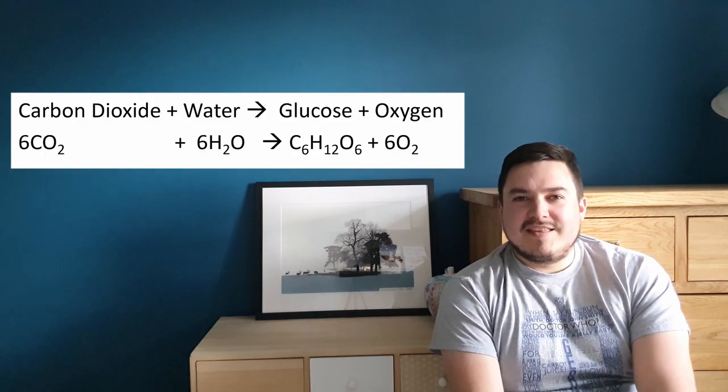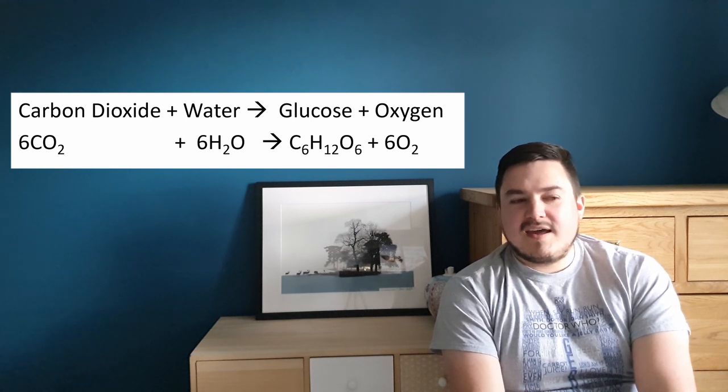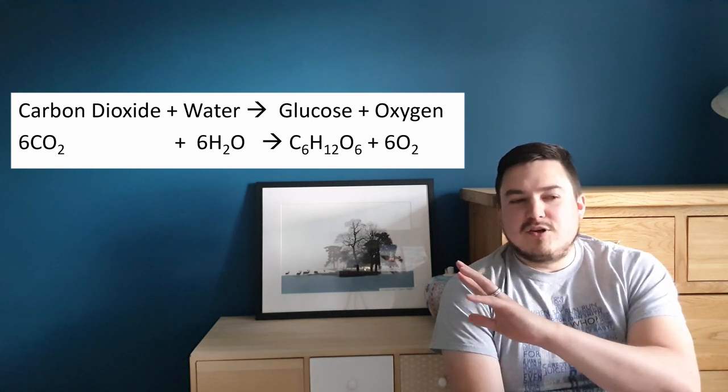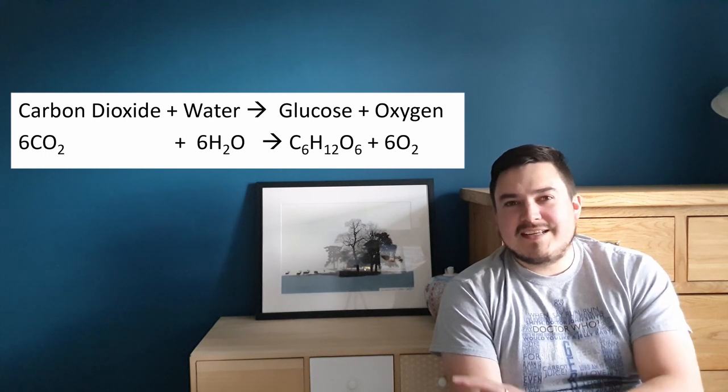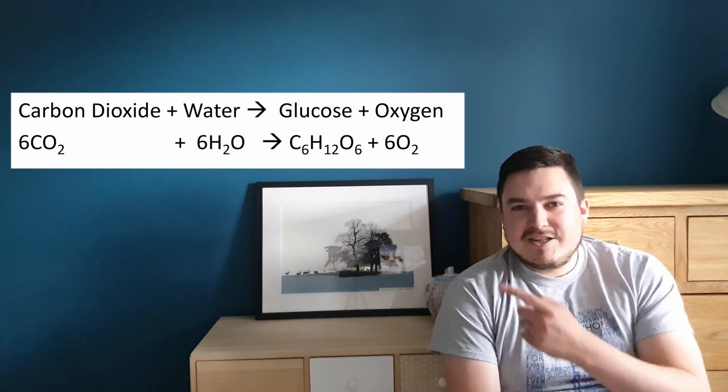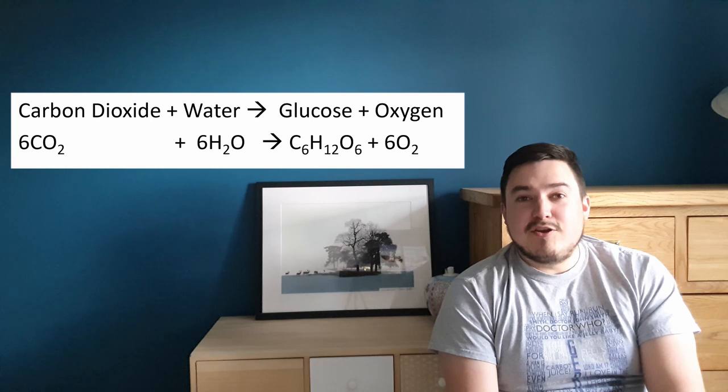To start with, the first thing you need to know about is photosynthesis - the most important thing that plants do to make their own food using sunlight. We use this word equation and this symbol equation to help us with that. It's carbon dioxide plus water makes glucose and oxygen.